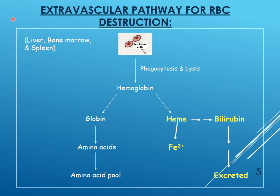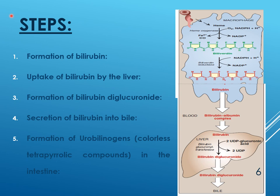RBCs are taken up by macrophages mainly in the liver, bone marrow, and spleen, where phagocytosis and lysis occur. Hemoglobin is liberated; globin is broken down into the amino acid pool; heme is converted into bilirubin and excreted, while the iron part of heme is stored as ferritin. There are three main processes in heme catabolism: uptake, conjugation, and secretion of bilirubin.